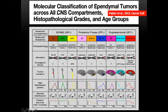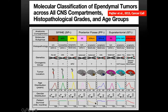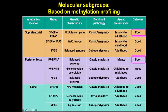Looking at the landmark paper by Pajtler in 2015, which did enormous work on molecular subtyping: there are 9 molecular subgroups based on methylation status — 3 for spine, 3 for posterior fossa, and 3 for supratentorial. Each group also contains a sub-ependymoma type (grade 1, good prognosis). The remaining groups with poor prognosis are RELA (supratentorial) and PFA (posterior fossa).